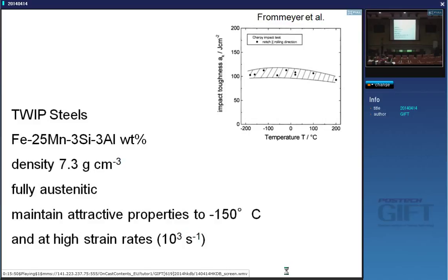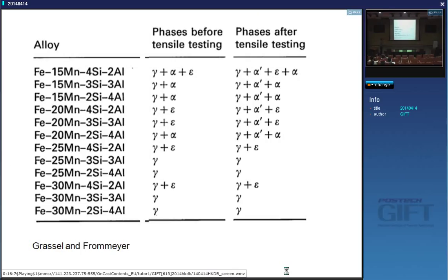The difficulty with manganese is in processing: manganese evaporates very easily, so making a high-manganese steel is very difficult and there is a lot of research on that aspect alone. One role of manganese, silicon and aluminium is to control the stacking fault energy. If the stacking fault energy is very high, it is unlikely that hexagonal close-packed epsilon martensite will form, or even alpha-prime (BCC) martensite — because alpha-prime often nucleates at intersections of epsilon martensite plates. To control the stacking fault energy you use manganese, silicon and aluminium as variables.